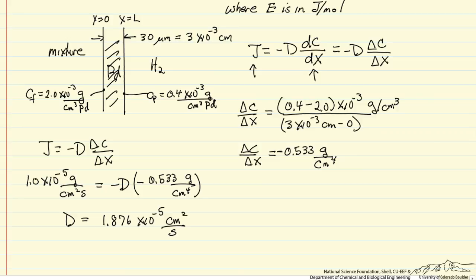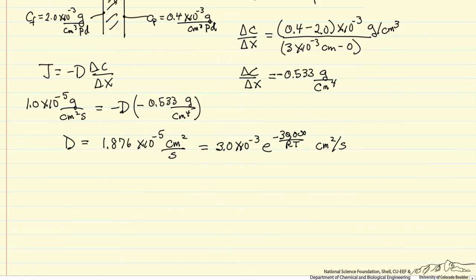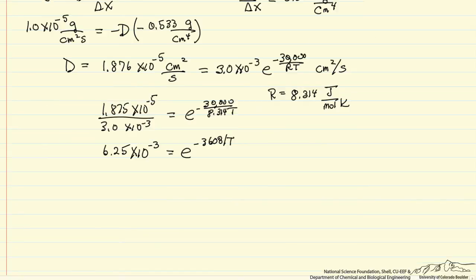So calculate the diffusivity, and the units end up being centimeters squared per second. Then we're given that this is equal to, so I can rearrange and take logs to solve for the temperature, where I'm going to use R is equal to 8.314 J per mol per kelvin. So this is doing the division, and now I'll take the log of both sides, and then I can solve for the temperature, and the temperature is 711 K.